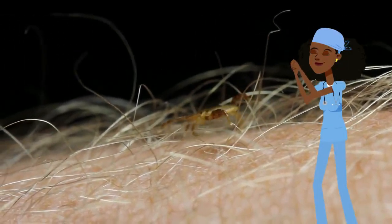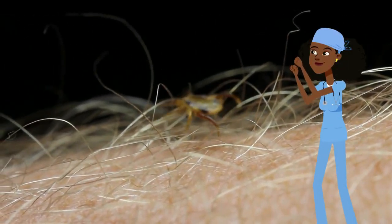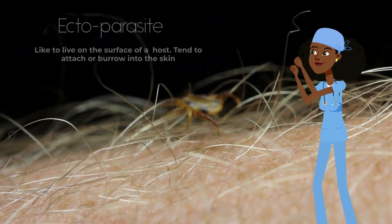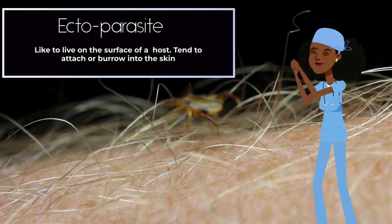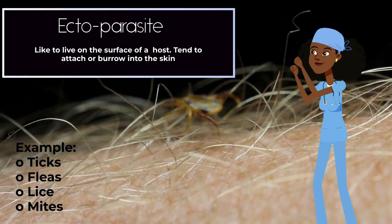This is a tick. A tick is an example of an ectoparasite. An ectoparasite likes to live on the surface of its host, like the skin. Other examples of ectoparasites are fleas, lice, and mites.